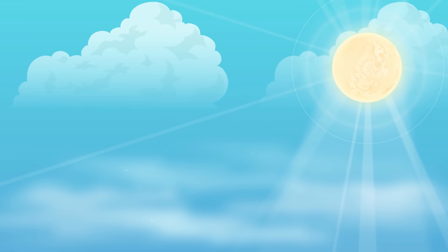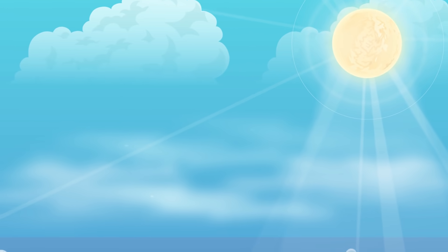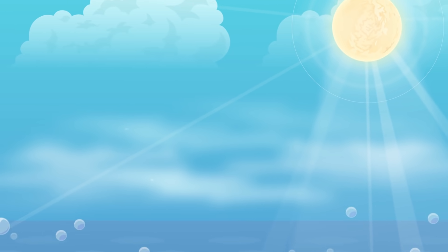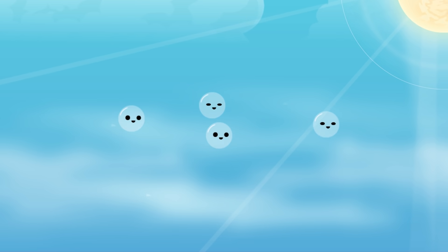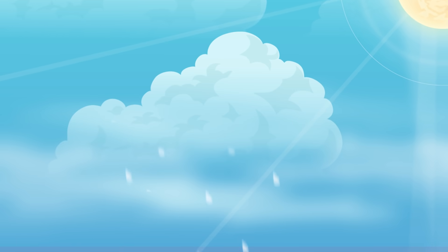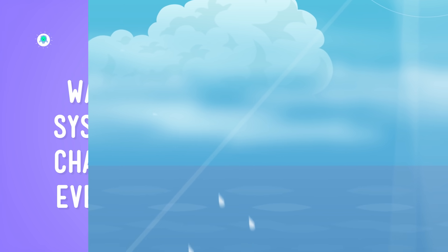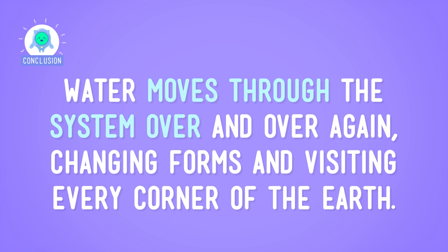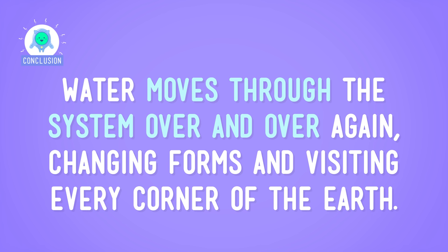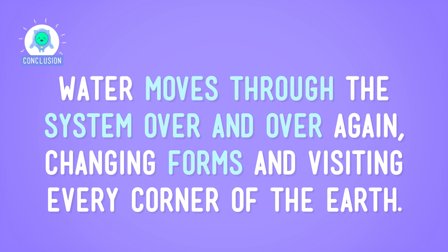Let's cycle back and review what we've learned. Energy from the sun powers the water cycle, a process that moves water around the globe through evaporation as the water rises, condensation as it forms into clouds, and precipitation as it falls back down in the form of rain, snow, sleet, or hail. Water moves through the system over and over again, changing forms and visiting every corner of the Earth. I bet you've got a whole new respect for this glass of water, huh?